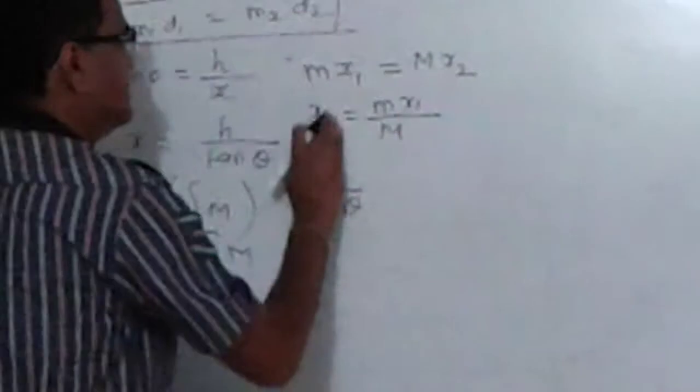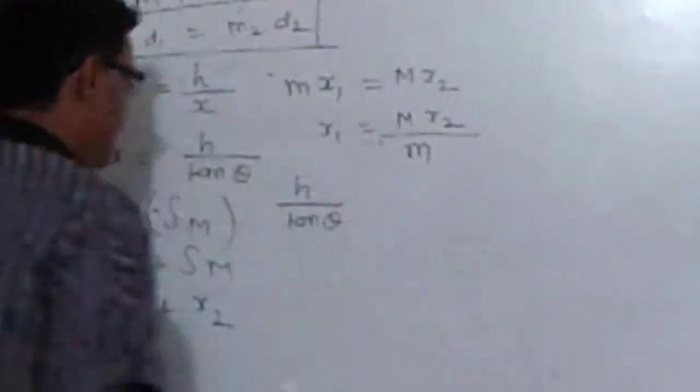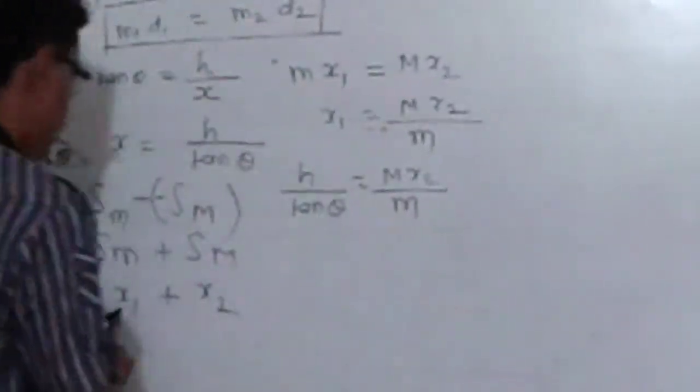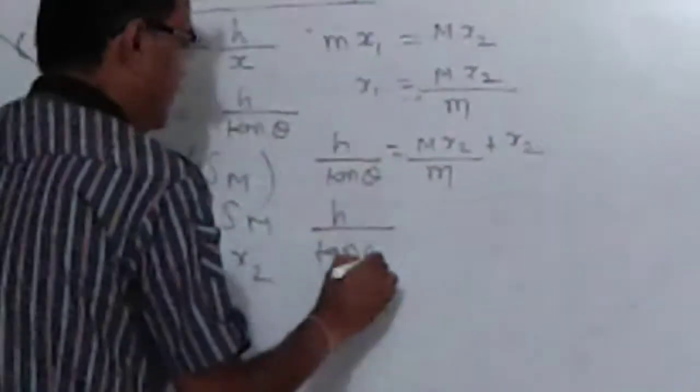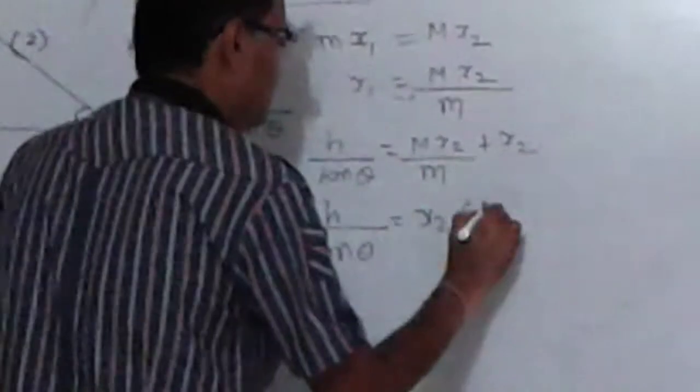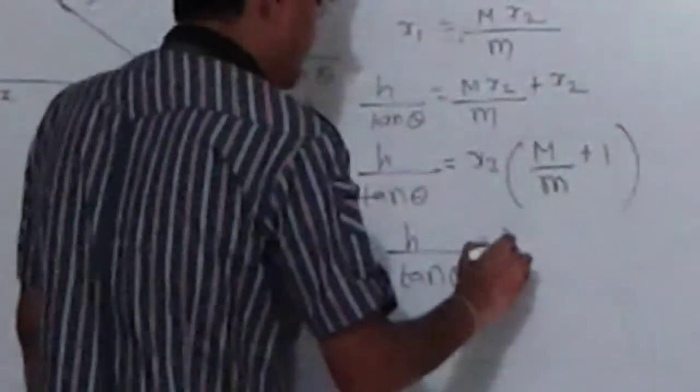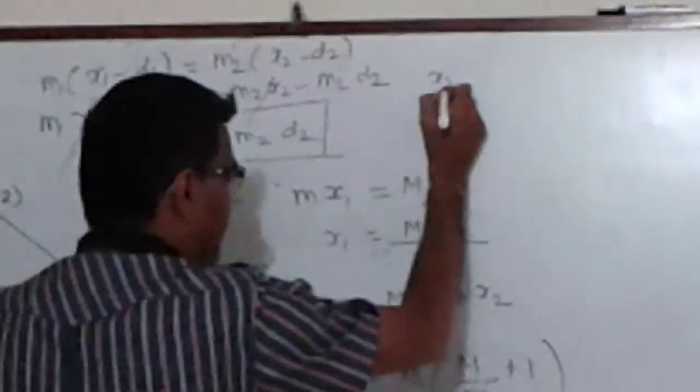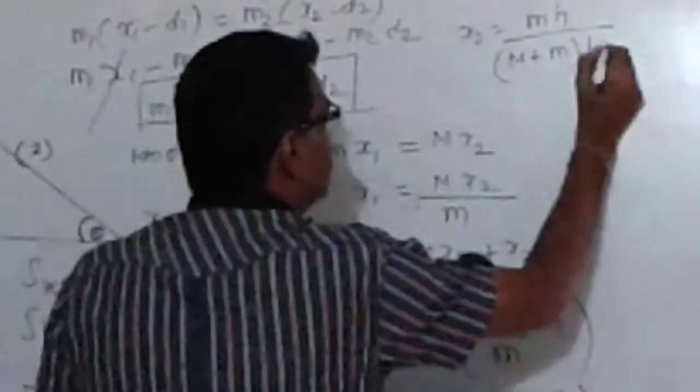Sorry, let me get x1 in terms of x2 because we want to find the value of x2 here. So h upon tan θ is m*x2 upon M, which is x1, plus x2. Let me take h upon tan θ equal to x2 times (capital M plus small m) upon M. On rearranging, I will get the value of x2 as m into h upon (M + m) into tan θ.